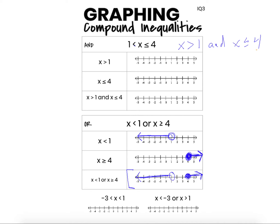We can again look at the two simple inequalities that make up this compound inequality. For x is greater than 1: open dot at 1, arrow to the right because we're looking at all the numbers greater than 1. For x is less than or equal to 4: closed dot at 4, arrow to the left because we're looking at all the numbers less than or equal to 4. Now I can graph both inequalities on one number line.